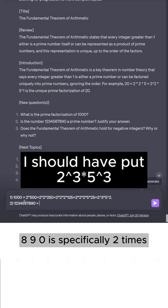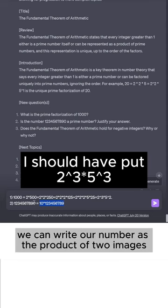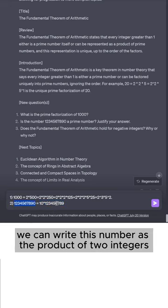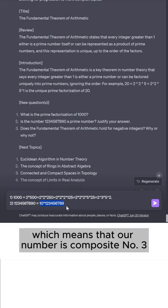1,234,567,890 is specifically 10 times 123,456,789. And so we can write this number as the product of 2 integers, both greater than 1, which means that our number is composite.